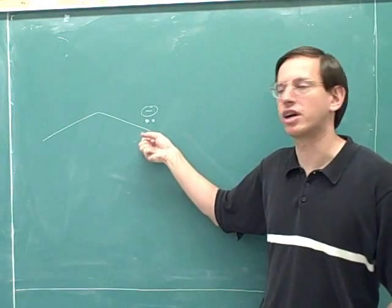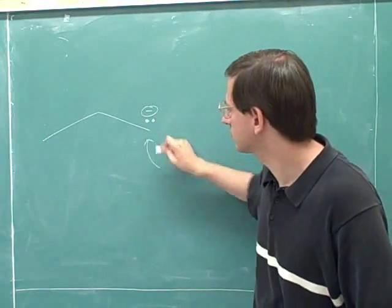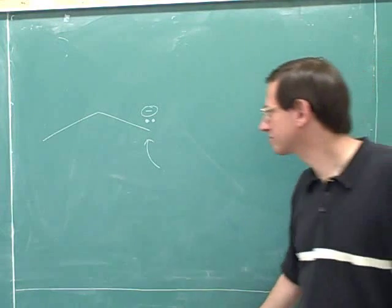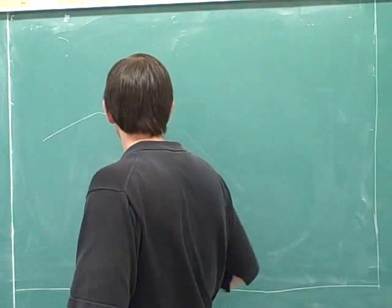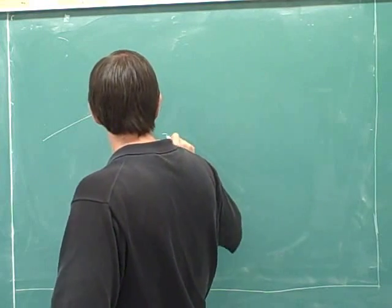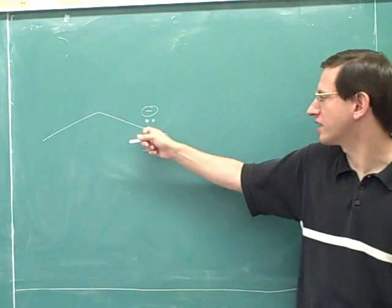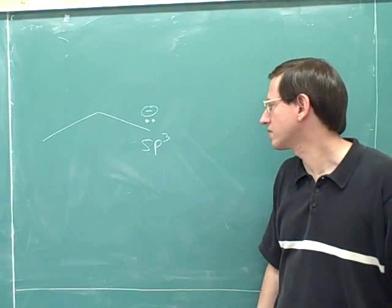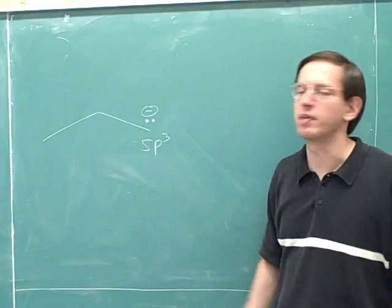What is the hybridization of this carbon? It's sp3. This carbon is sp3 because it's attached to three atoms and has a lone pair. So that gives 3 plus 1 is 4, four hybridized orbitals.